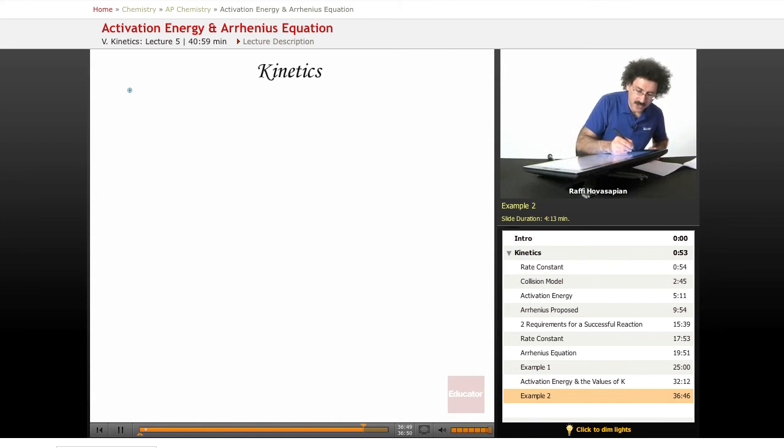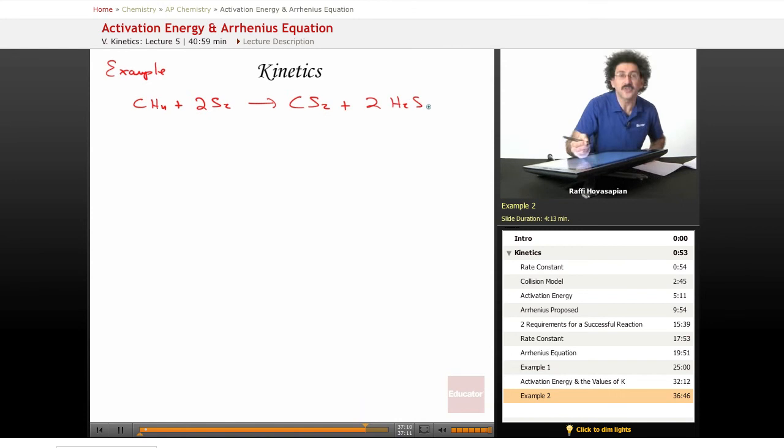We have the following reaction. We have methane, CH4, plus 2 moles of diatomic sulfur forms carbon disulfide plus 2 H2S gas, hydrogen sulfide gas.